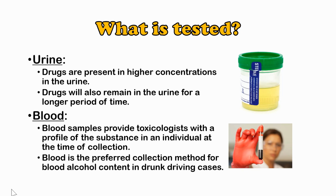Blood is another great way to determine what you've been exposed to, supplying a toxicologist with a profile of substances in the individual at the time of collection. Blood is the preferred method for blood alcohol content and drunk driving cases. When you sign your driver's license in Kentucky, there is implied consent: you have consented that if a police officer pulls you over and suspects you of drinking alcohol, they may draw your blood. You can say no, but you will be arrested and taken to the police station, where they will eventually draw your blood.